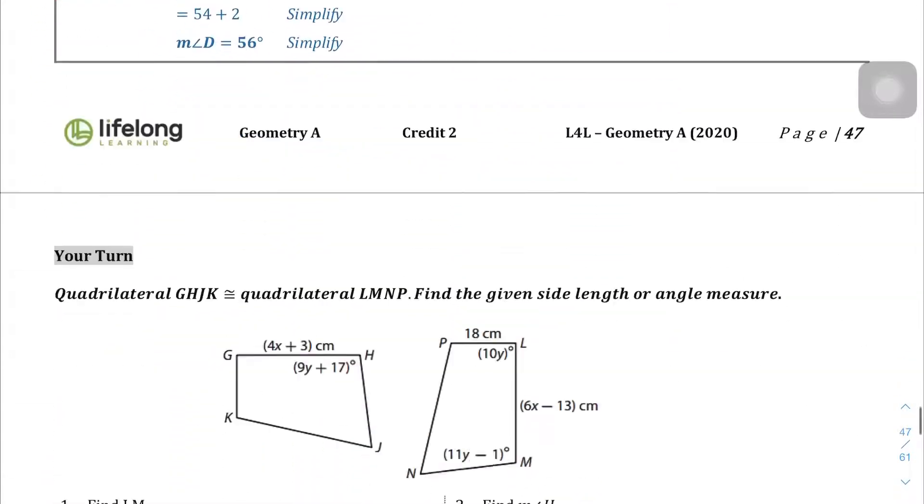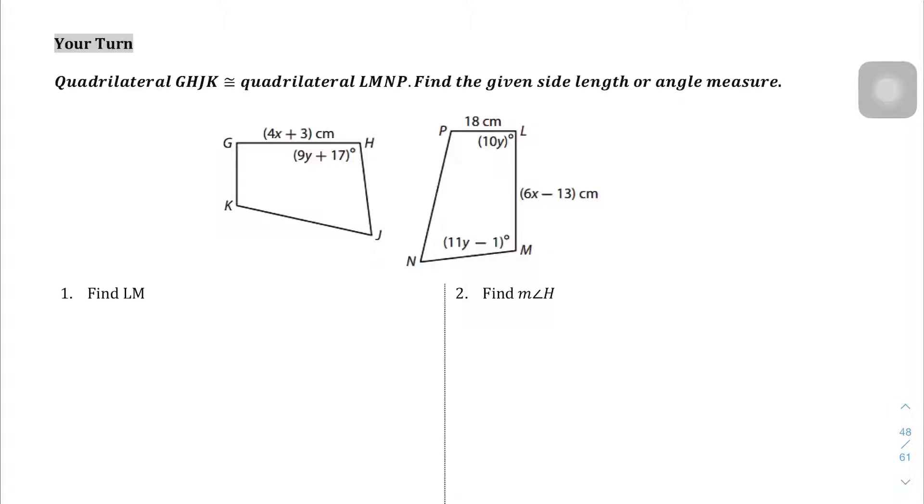We're going to jump into the Your Turn question on the next page, and we have two quadrilaterals here, quadrilateral GHJK and quadrilateral LMNP, and we're going to find the given side length or angle measures. First of all, like I said in the previous video, this might require a little bit of 3D spatial reasoning. Basically what we need to be able to do is identify which part of the quadrilateral corresponds to the other quadrilateral. We can see here that it's a very interesting shape. If I were able to copy this shape, going from here to here, here to here, here to here.